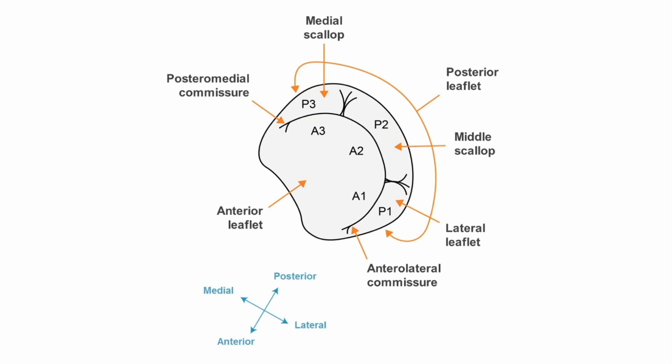The leaflet segments are numbered starting from the anterolateral commissure which lies nearest to the left atrial appendage, where the A1 and P1 segments are, across to the posteromedial commissure where the A3 and P3 segments are.